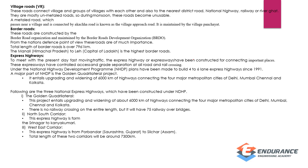Under NHDP, the Golden Quadrilateral area will have 75 railway over-bridges to eliminate railway crossings. The next part is the North-South and East-West corridors — Srinagar to the south and east-west direction. The total length of the two corridors is 7,003 km.